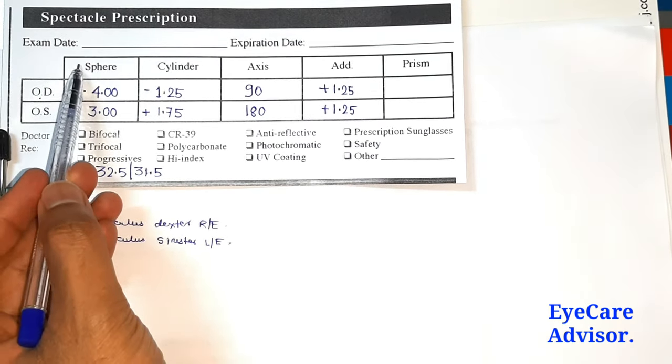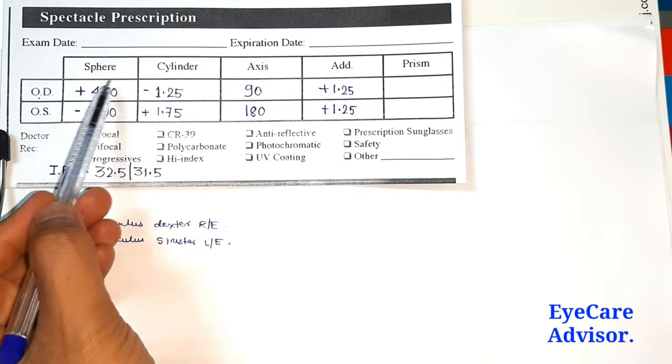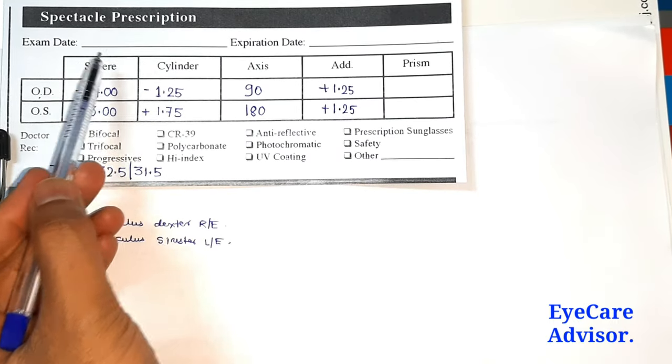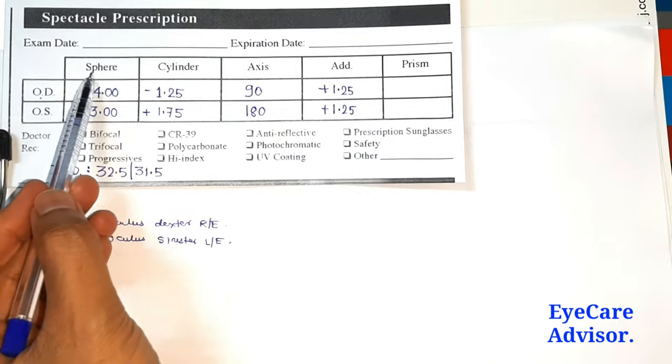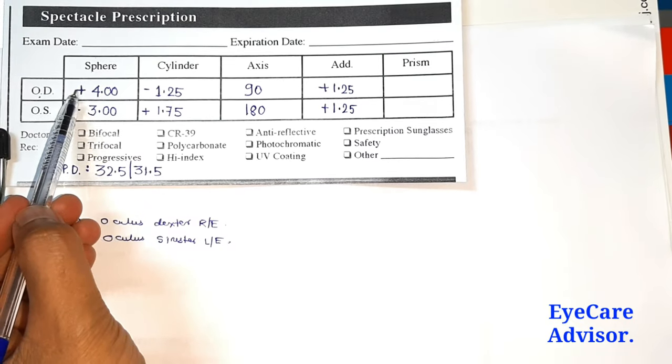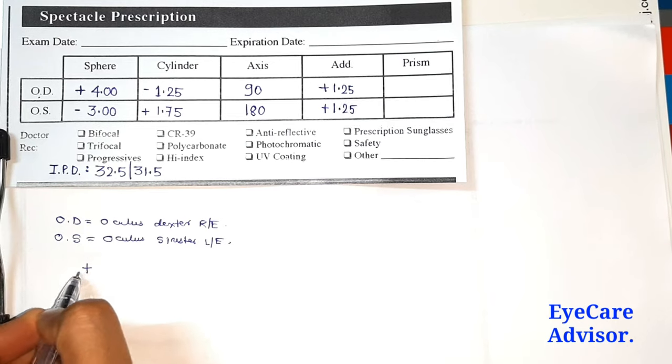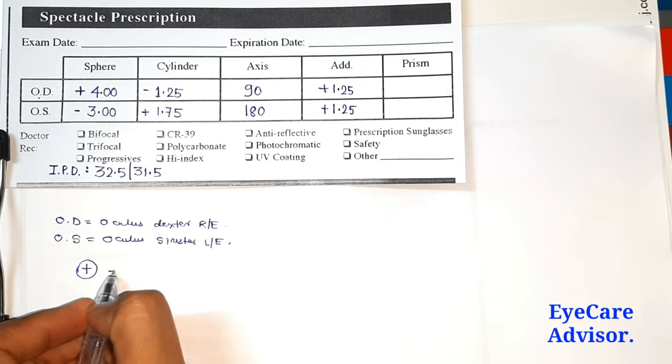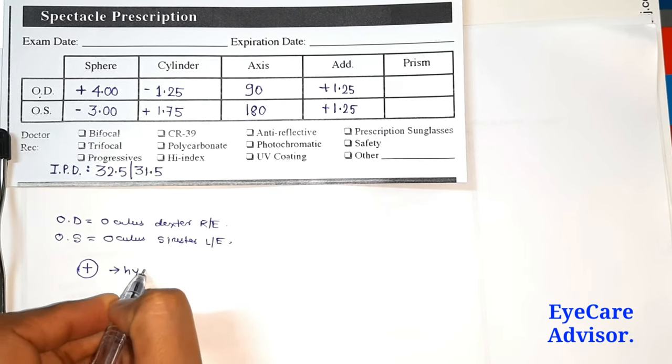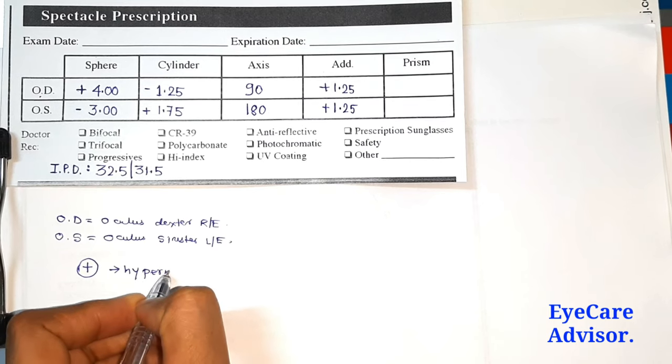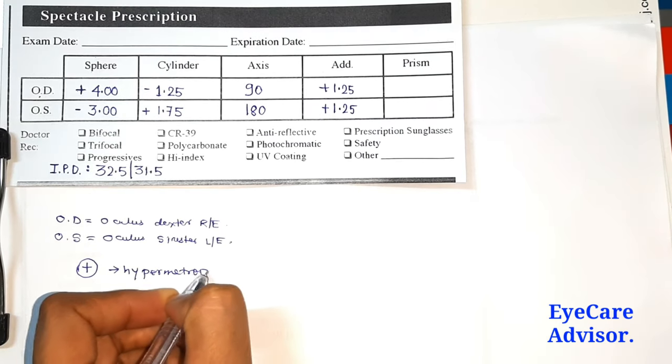Then in the next column we see it's written sphere. Sphere means this is the power for the distance. You can see for the right eye it is written plus 4. So what does the plus sign denote? Plus sign means those who are having hypermetropia, for them the plus sign is given.